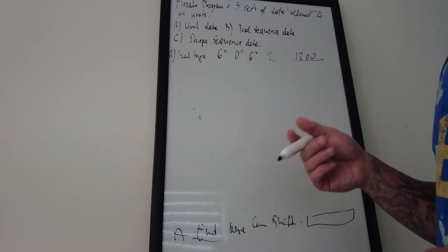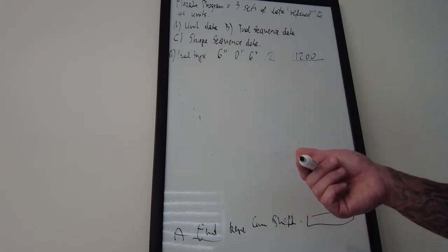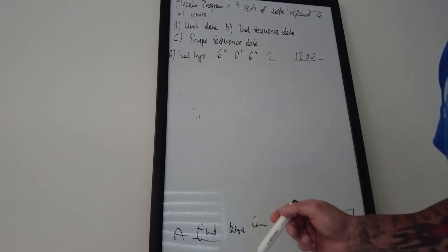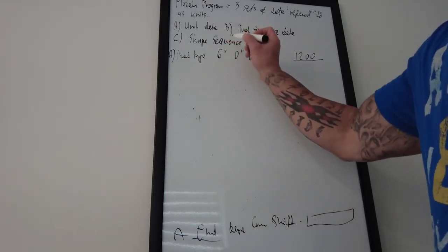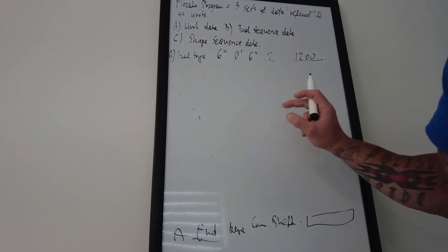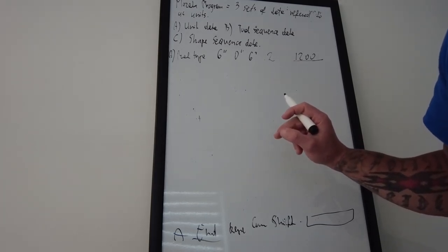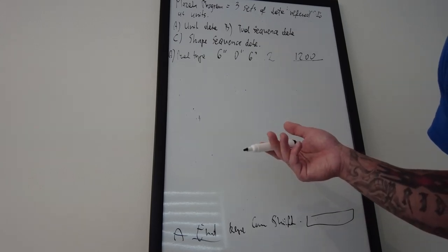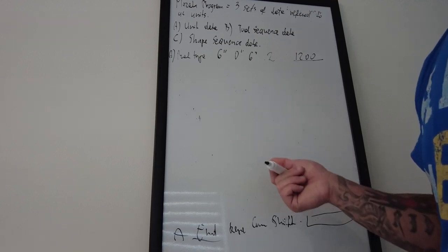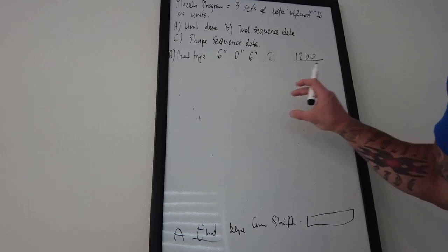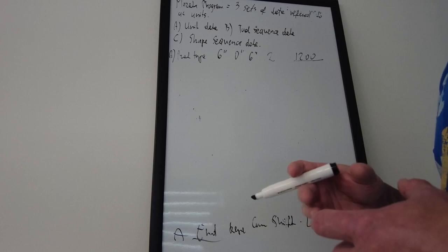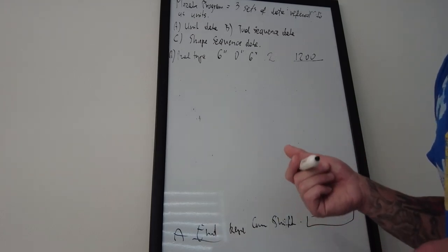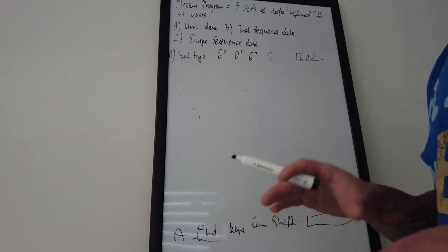There are many different unit data types. You have the material unit as common data, the end unit as common data. You also have a sub-program unit, head selection — for example head one or two — and transfer, where you're telling the machine to perform a certain task like transferring a head without any tools or shape sequences. Common unit data is you telling the machine to do a certain thing that has nothing to do with actually cutting material.